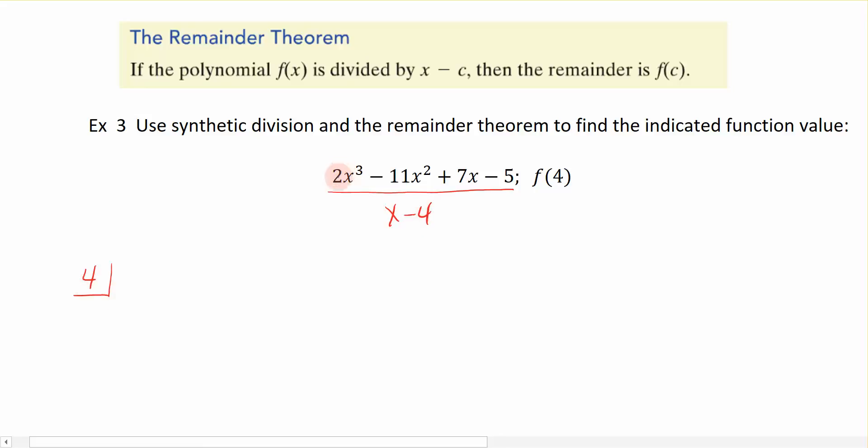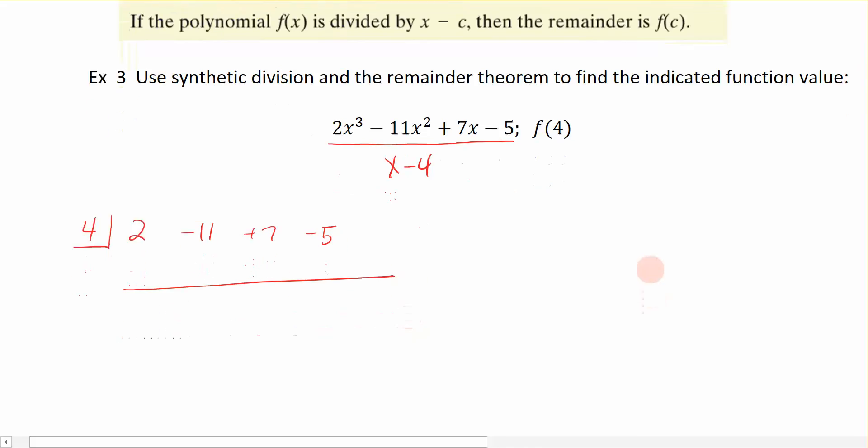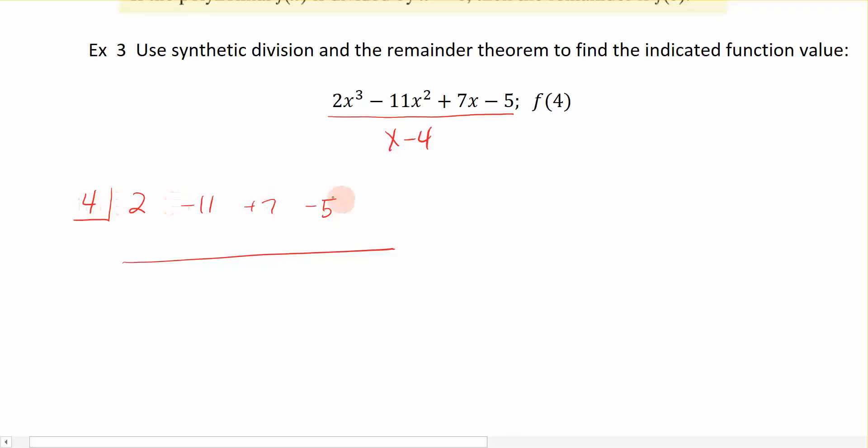Now I'm going to come in and I'm going to do coefficients only of these terms. So the first term is 2 minus 11 plus 7 minus 5. And there is my setup. I'm going to bring my 2 down and I'm ready to begin. Remember, we multiply and add.